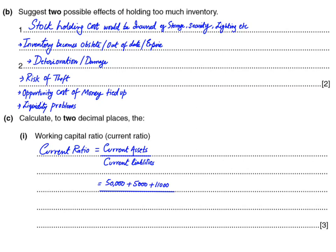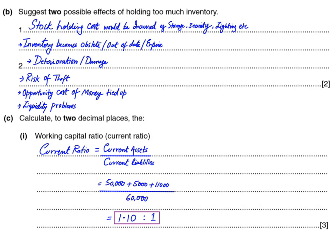Current liabilities are those to be repaid within the next year. We have trade payables — only one liability here. Adding all current assets gives 66,000, and there is only one current liability of 60,000. So 66,000 divided by 60,000 gives 1.10. I write 1.10 rather than 1.1 because the examiner specifically asked for two decimal places. We then add 'ratio 1' — meaning for each dollar of current liability we have current assets of 1.10, so current assets are 10 percent more than current liabilities.